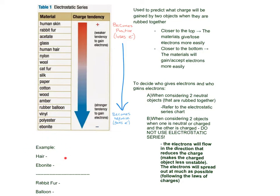Here's an example down here. We have hair and ebonite. Hair is up here and ebonite is down here. Because hair is at the top or above ebonite, then we know that it's going to become positive. Hair is going to become positive and ebonite is at the bottom. It's going to gain electrons, so it's going to be negative.